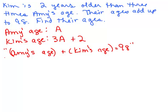So you can sort of think of this as kind of a cross between words and algebra. So let's plug in what Amy's age is. It's just A, so we could write A plus, now Kim's age is 3A plus 2. So I could write 3A plus 2. So in other words, there's Amy's age, there's Kim's age, and it adds up to 98.